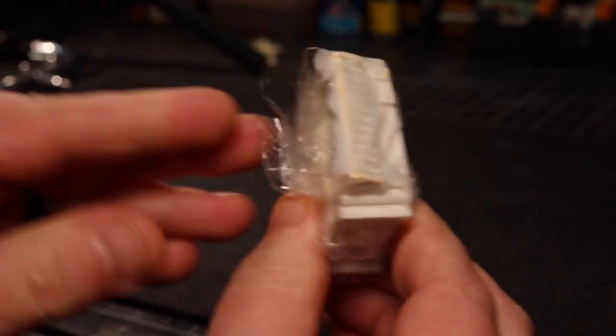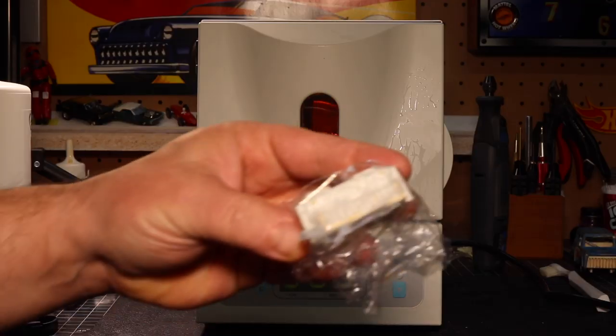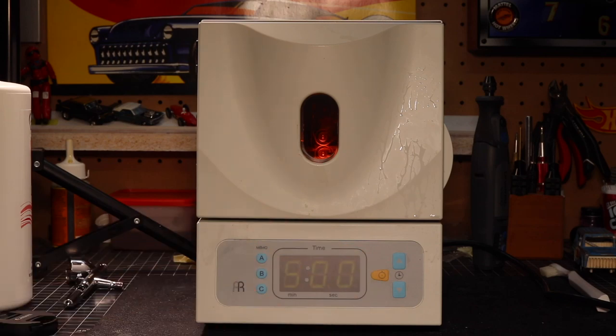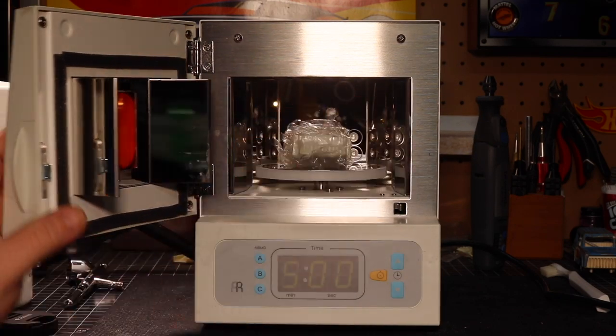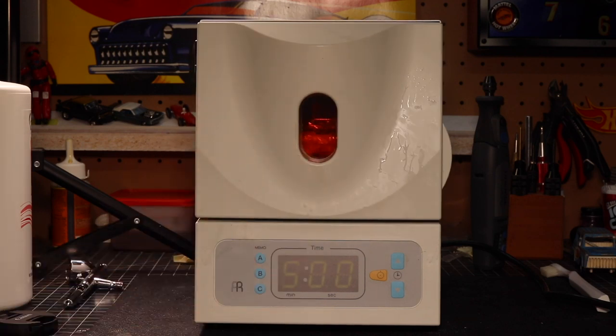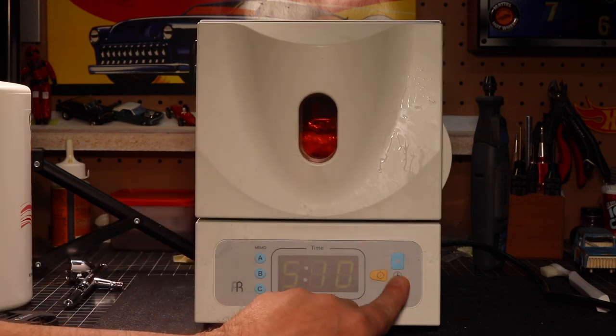I'm still going to use saran wrap, but the source is different. We're using a UV oven. This is made for dental products, like models, that kind of thing. I just wanted to give it a shot. We're going to put it in there for five minutes.